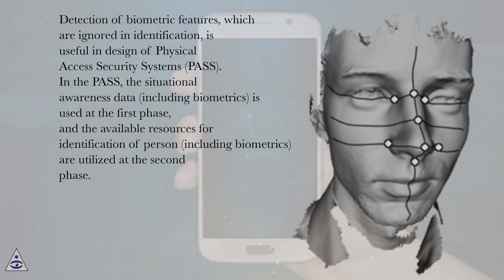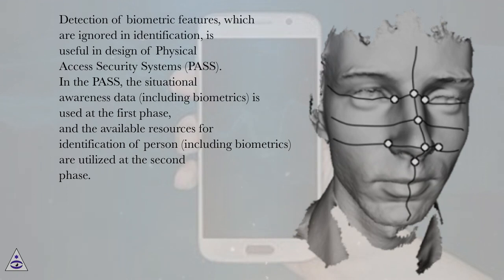Detection of biometric features which are ignored in identification is useful in design of Physical Access Security Systems, PASS. In the PASS, the situational awareness data, including biometrics, is used at the first phase, and the available resources for identification of person, including biometrics, are utilized at the second phase.